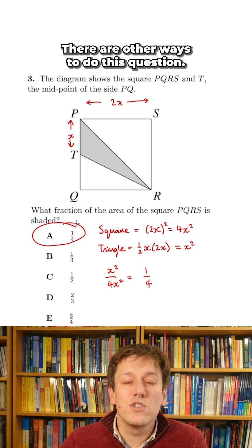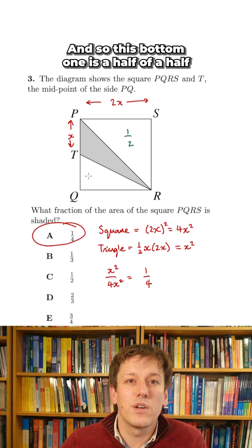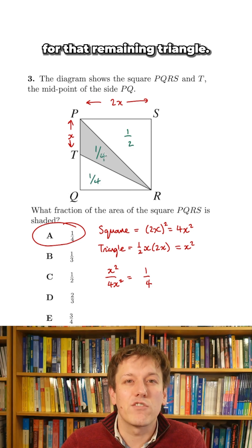There are other ways to do this question. You could also notice that this top triangle is a half of the whole square, and so this bottom one is a half of a half, which is a quarter, which leaves a quarter for that remaining triangle.